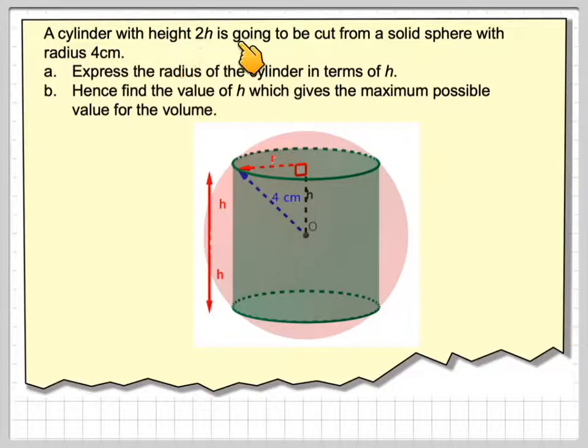A cylinder with height 2h is going to be cut from a solid sphere with radius 4 centimeters. Express the radius of the cylinder in terms of h, hence find the value of h which gives a maximum possible value for the volume.